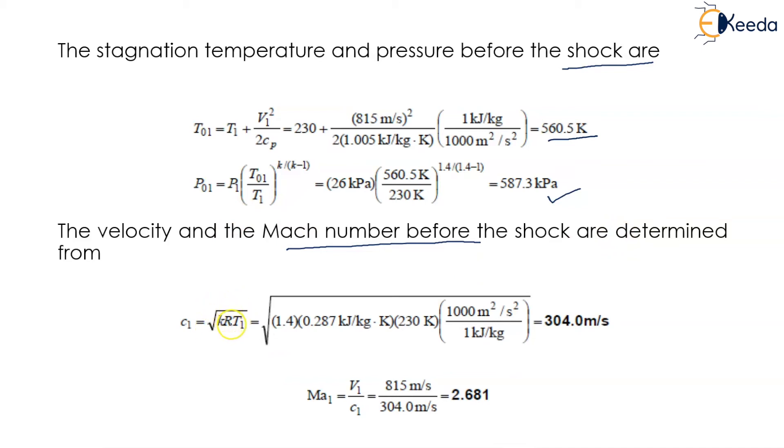The velocity before the shock is determined from C1 = √(K×R×T1), which is √(1.4 × 0.287 × 230), equal to 304 meters per second.